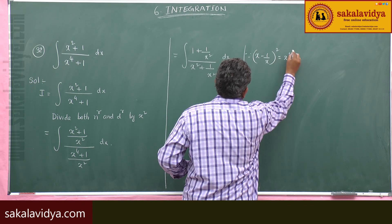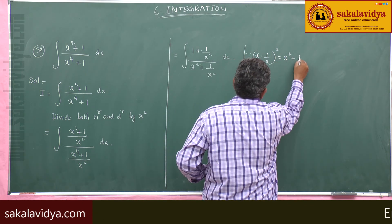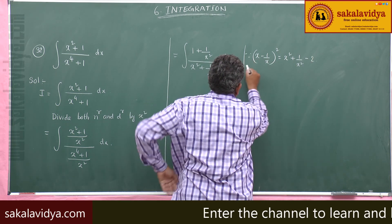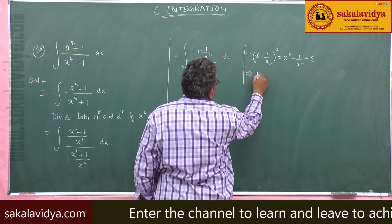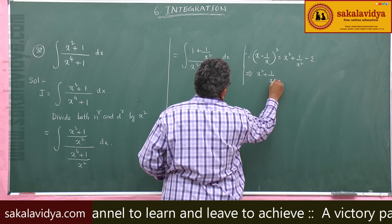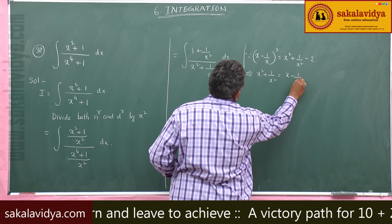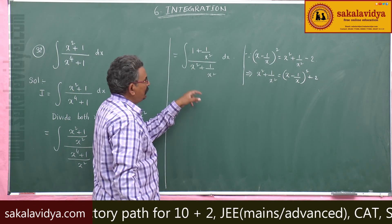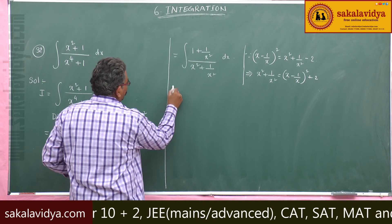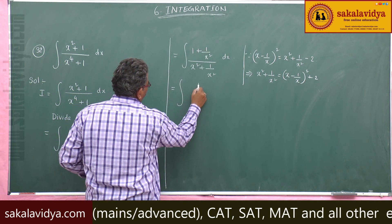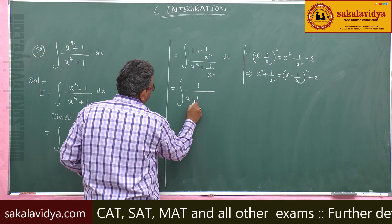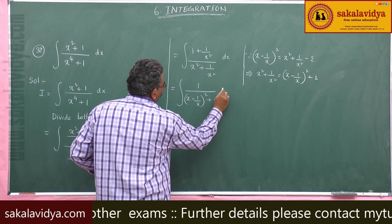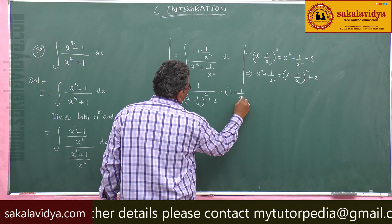Try x minus 1 by x whole square. This equals x square plus 1 by x square minus 2. So that means x square plus 1 by x square equals x minus 1 by x whole square plus 2. Let us substitute here. This can be written as integral of 1 by x minus 1 by x whole square plus 2, times 1 plus 1 by x square dx.